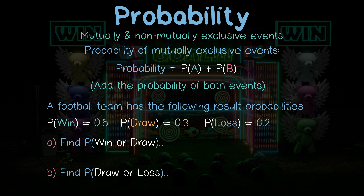And what about losing or drawing? The probability of a win or a draw first: we take the probability of winning to be 0.5 and drawing to be 0.3. We add them together to get 0.8, and we're done.